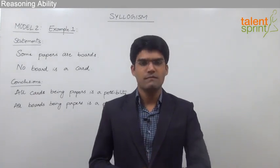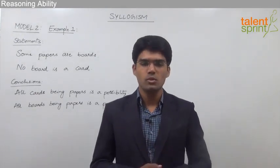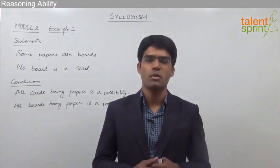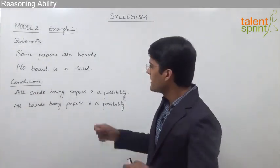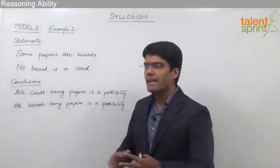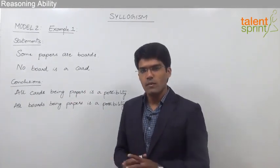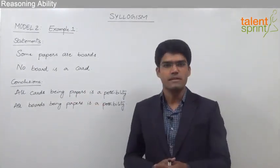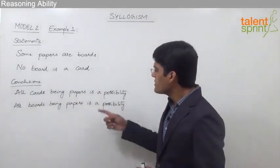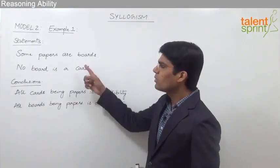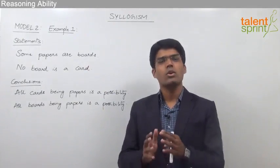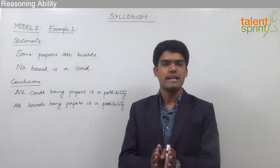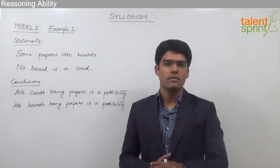After discussing various questions based on conclusions, let us now take the second model from syllogisms which is based on possibilities. Here a set of statements and conclusions are given where the conclusions are in terms of possibility, and we are supposed to find out which of these possibilities follow the given statements. A possibility is something which should satisfy at least one of the given Venn diagrams.